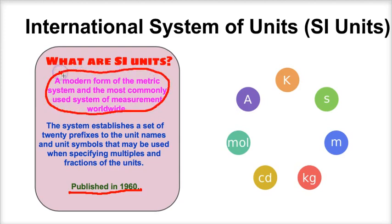The metric system basically establishes a set of about 20 prefixes — prefixes like kilo, hecto, deca, milli, centi, and so on — that we attach to several different units of measurement established during the conference held in 1960 in France.